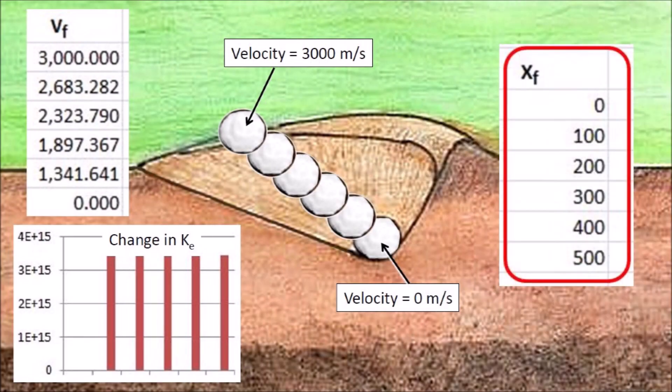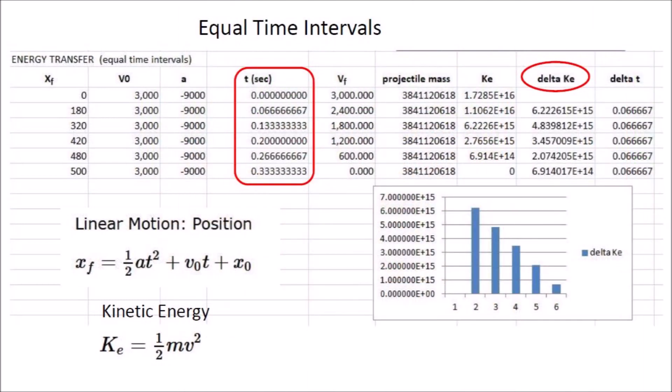This image illustrates snapshots of the projectile at 100 meter intervals. The change in kinetic energy is equal for each interval, but the velocity decreases as a function of deceleration and time. This spreadsheet shows the same trajectory, but for equal time intervals.